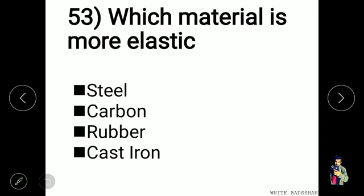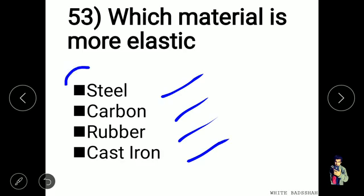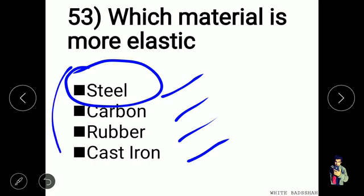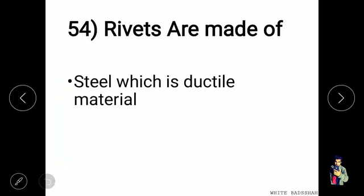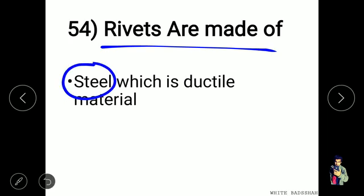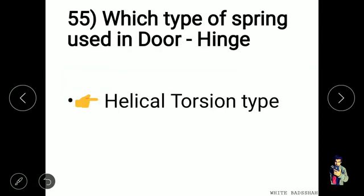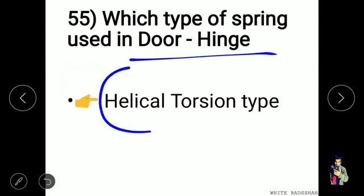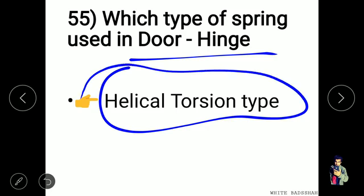Among steel, carbon, rubber, and cast iron, steel is the most elastic material. Rivets are made of steel, which is a ductile material. The helical torsion type of spring is used in door hinges.